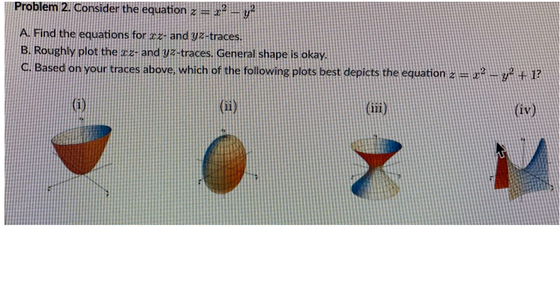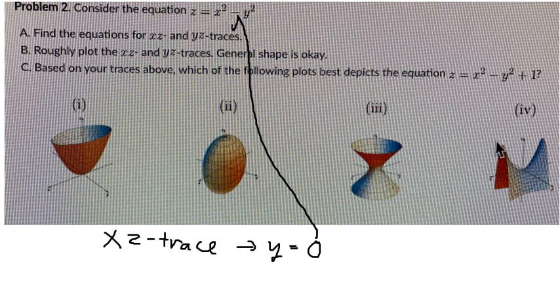I will show you how to answer about xz trace. That means they're missing about y, so we need to set up about y equals to number zero. So we put number zero here, and we have z equals to x squared.